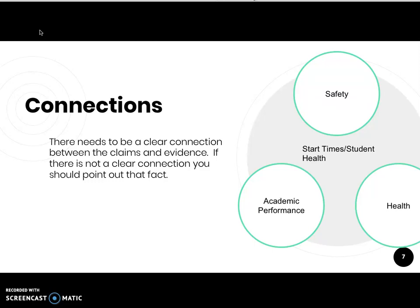If we were to remove the safety claim about car accidents and instead say our third claim was that start times make teachers crankier, that's not necessarily clearly related to the other two parts of the line of reasoning. While it might be a counterclaim, it doesn't mean this was a thorough and well-constructed line of reasoning. That would be what we call a flawed line of reasoning.